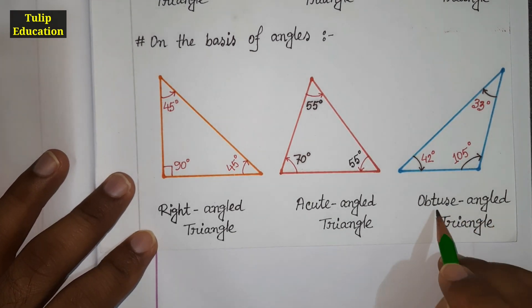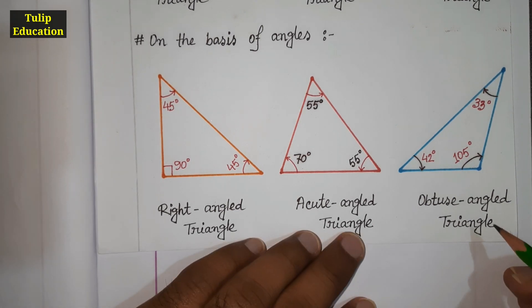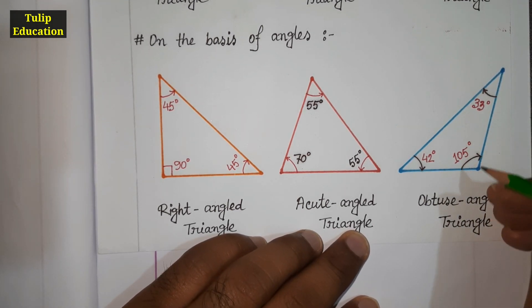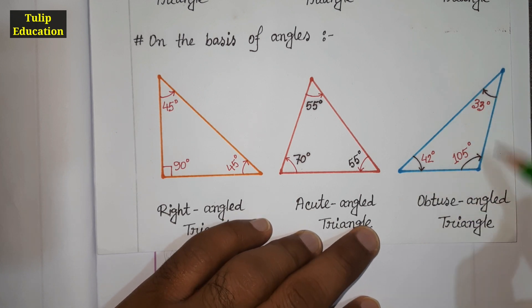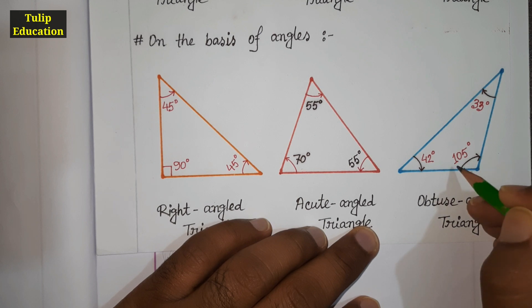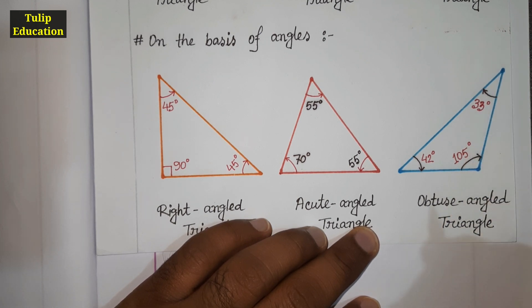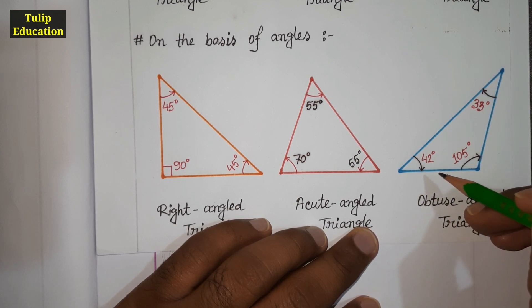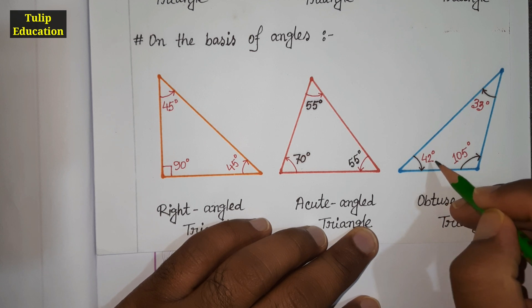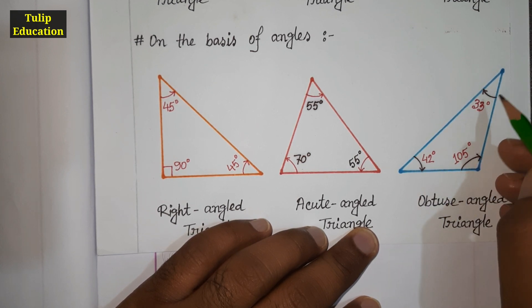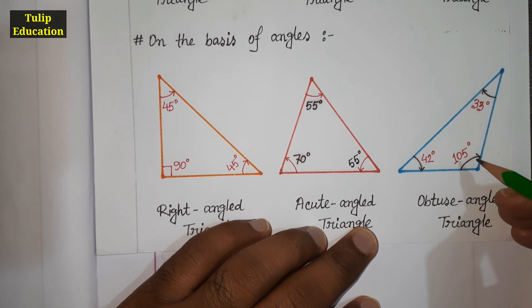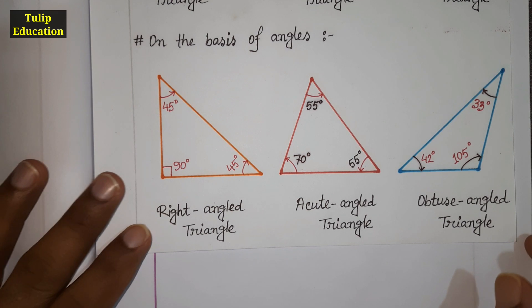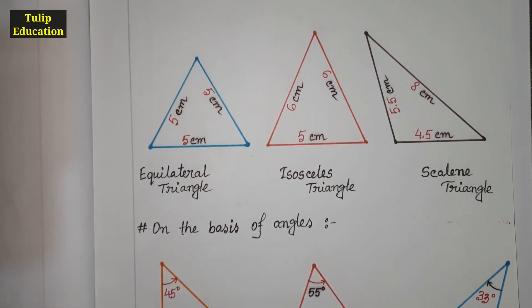Finally, we will discuss the obtuse angle triangle. In an obtuse angle triangle, one angle is greater than 90 degrees but less than 180 degrees. This is an obtuse angle triangle because one of its angles is 105 degrees. The other two angles will be acute angles — you can see one angle is 42 degrees and another is 33 degrees, both less than 90 degrees — and the summation of the three angles is 180 degrees. In this tutorial I have discussed the classification of triangles. See you in the next tutorial.